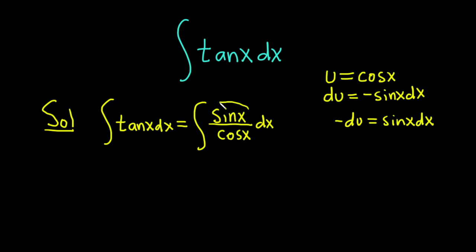And so now we can replace the sine x dx with negative du. So this is equal to negative integral du over u, and then cosine x is just u. And this is a special formula. This is going to give us negative ln absolute value of u plus our constant of integration.